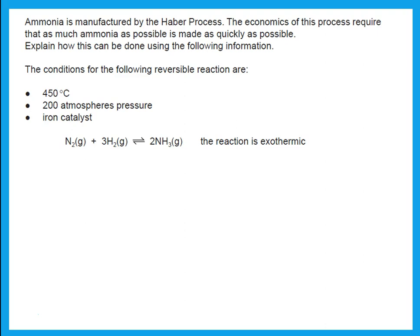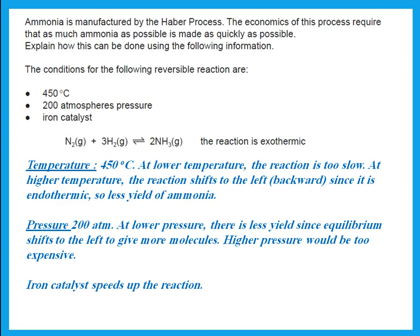Ammonia is manufactured by the Haber process. The economics of this process require that as much ammonia as possible is made as quickly as possible. The temperature is done at 450°C — if done at a lower temperature, the reaction will be too slow. If done at a higher temperature, the reaction shifts to the left backward because that is the endothermic side, so less yield of ammonia. The pressure is 280 atm — at lower pressures, there is less yield since equilibrium will shift to the left to give more molecules. Higher pressure will be too expensive. And we add the iron catalyst to speed up the reaction.